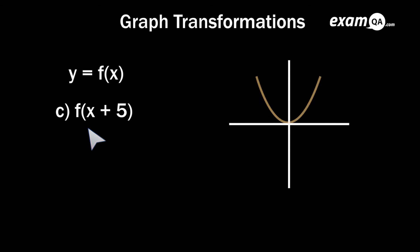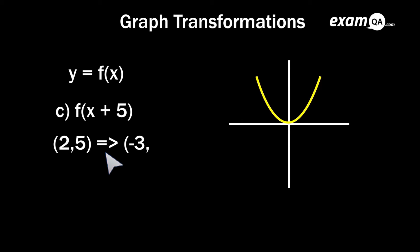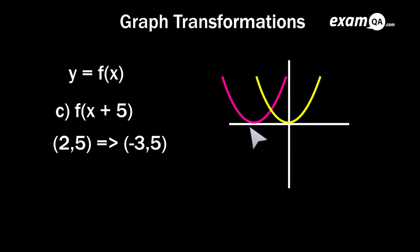Now let's look at the transformation f(x+5). This one affects the x-axis — you can remember that because it's inside the brackets with the x. Something odd happens here: naturally we'd expect it to move to the right by 5 since it says plus 5, but it does the exact opposite — it moves to the left. On a coordinate, since it says plus 5, you subtract 5 from the x value and the y value stays exactly the same. On the graph of y equals x squared, the graph shifts left by 5, so the vertex was at 0 and now it's at minus 5.